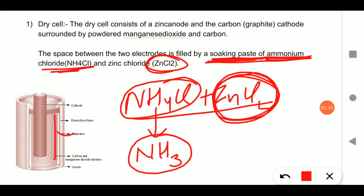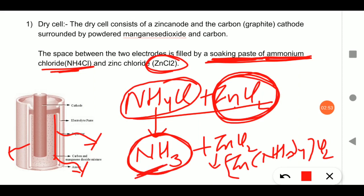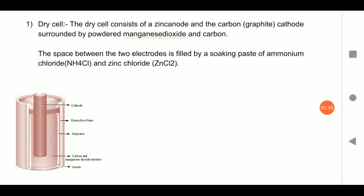NH4Cl may produce ammonia, which is a volatile component. If this ammonia is released freely, the cell may start leaking. So ZnCl2 is used to stop this — it forms a complex with ammonia: [Zn(NH3)4]Cl2. This is the role of ZnCl2: it protects the cell from leaking.